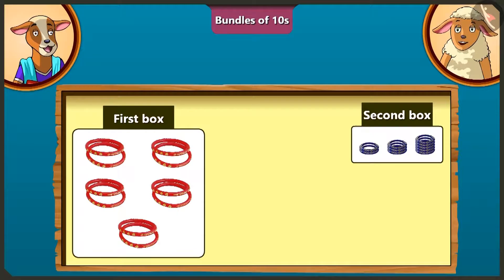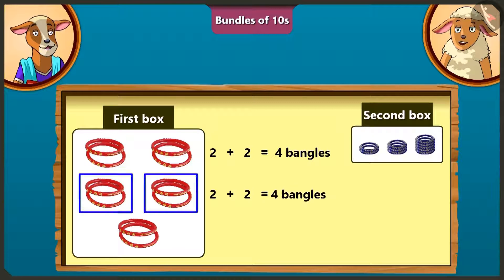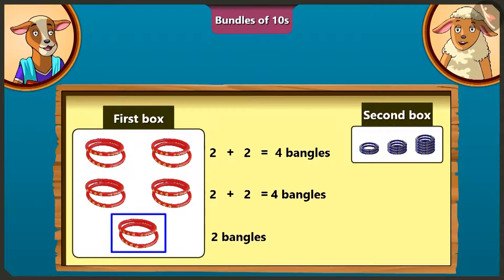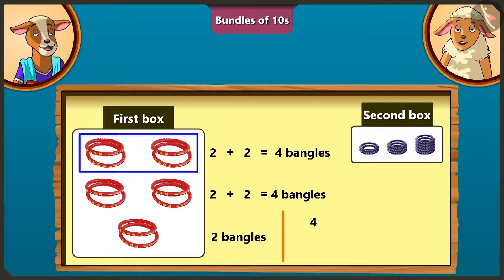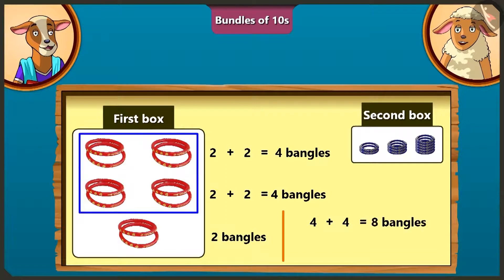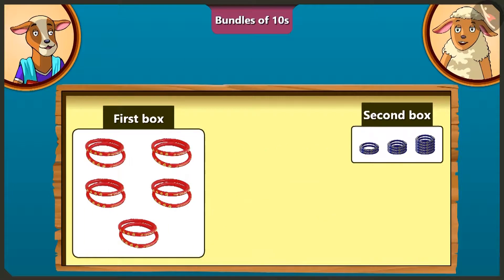I will teach you. There are 2 and 2, 4 bangles in the first row. There are also 2 and 2, 4 bangles in the second row, and there are 2 bangles in the third line. So we can also count bangles this way. We get 8 by adding 4 plus 4, and 10 by adding 2 with the 8. So there are 10 bangles in the first box.